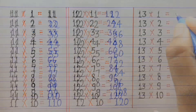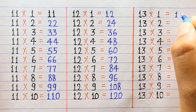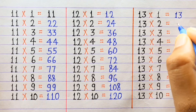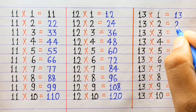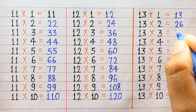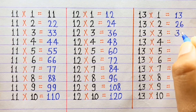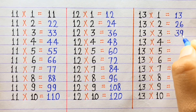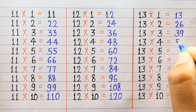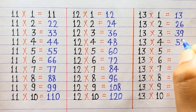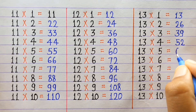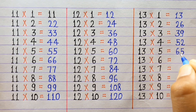13×1=13, 13×2=26, 13×3=39, 13×4=52, 13×5=65.